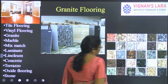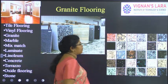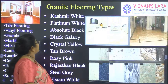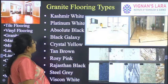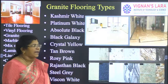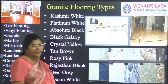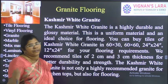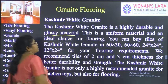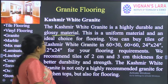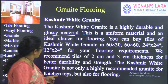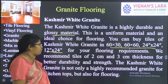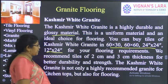There are many different types of granite available — Kashmir White, Platinum White, Absolute Black, Black Galaxy, Crystal Yellow, Tan Brown, Rosy Pink, Rajasthan Black, Steel Grey, and more. Kashmir White granite is very white, highly durable and glossy — uniform and an ideal choice for flooring, available in 60×30, 24×24 inch, or 12×20 inch sizes, in 2 to 3 centimeter thickness. Platinum White granite is similar to silver color, very bright, and is perfect for budget flooring as it is less expensive than Kashmir White while offering very high durability.